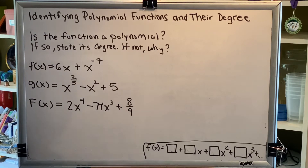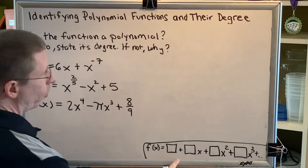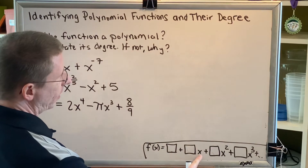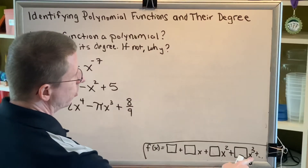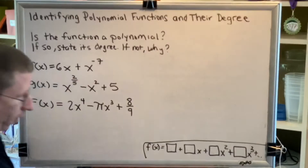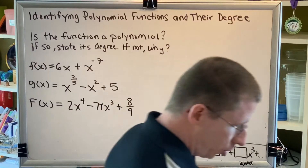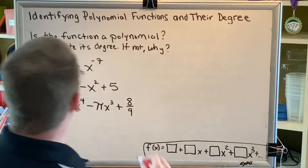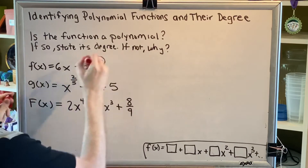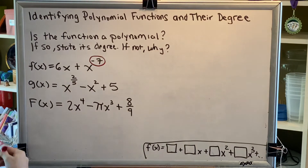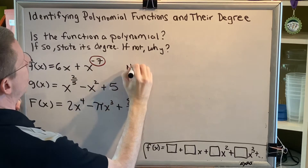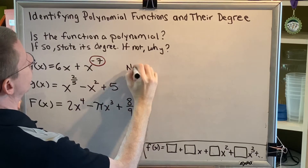A polynomial can only have exponents that are counting numbers — x to the 1, x to the 2, x to the 3 — never negative. Because of this negative 7 as the exponent on this x, this is not a polynomial.